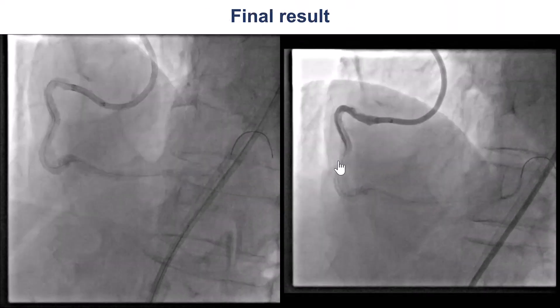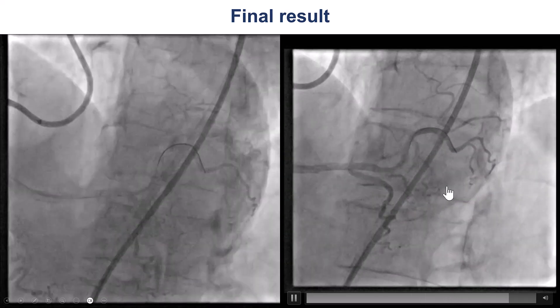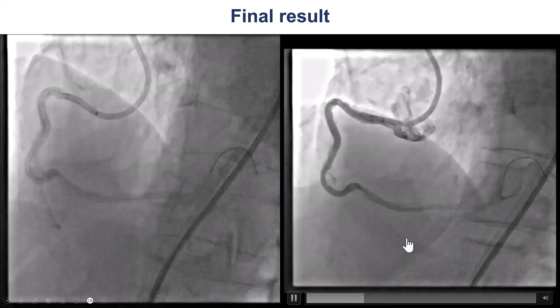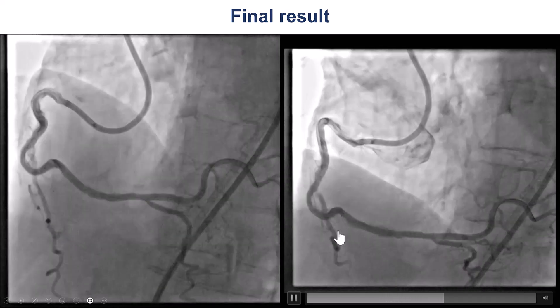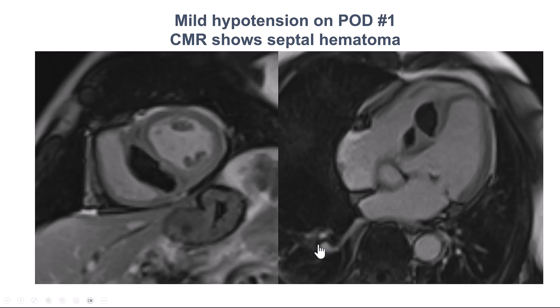The stent was deployed and provided a nice final result with TIMI flow into the right coronary artery, which was actually a fairly large vessel. Fortunately, we did not lose patency of the acute marginal branch. Incidentally, the following day there was an episode of hypotension. The patient had a cardiac MRI and was found to have a septal hematoma, likely from the retrograde crossing attempts. However, he was hemodynamically stable afterwards and did not require any intervention.